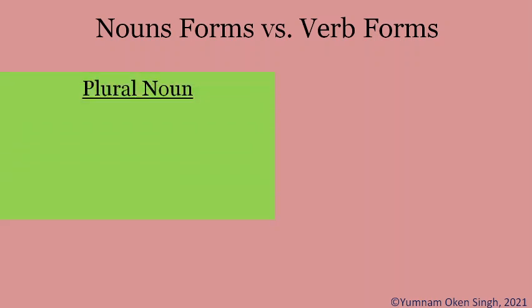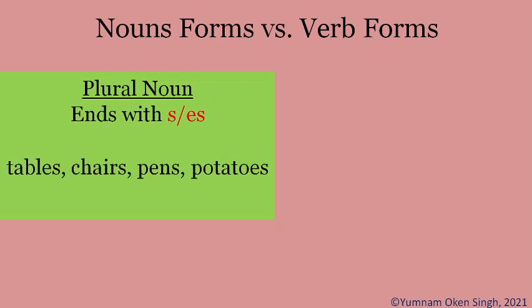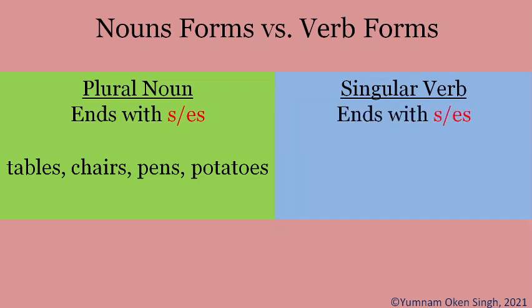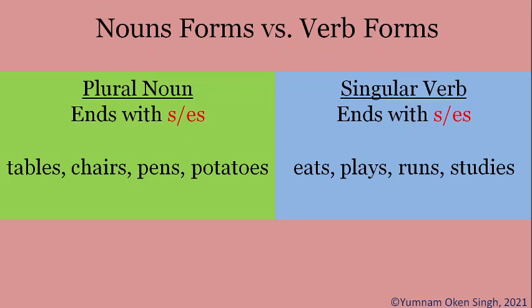Coming to the comparison of nouns and verbs in their forms: plural nouns take 's' or 'es' at the end — for example, tables, chairs, pans, potatoes. Contrary to this, in verbs it is the singular which takes 's' or 'es' — for example, runs, studies. So plural nouns end with 's' or 'es', whereas if a verb ends with 's' or 'es' it is singular.